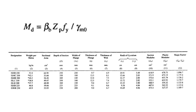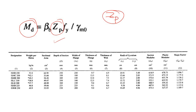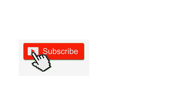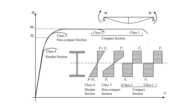In this video I will discuss the plastic section modulus, or in short ZP. To design any steel member, you have to find the design capacity and for that you need to use this plastic section modulus for your compact or semi-compact section. You should know the basics of this plastic section modulus and how to calculate it manually. So let's start from the very basic.